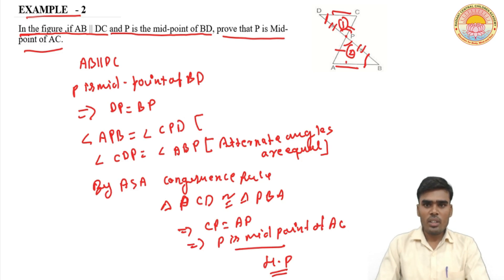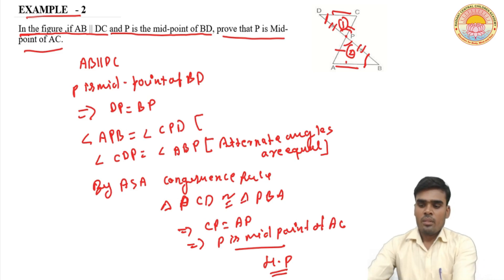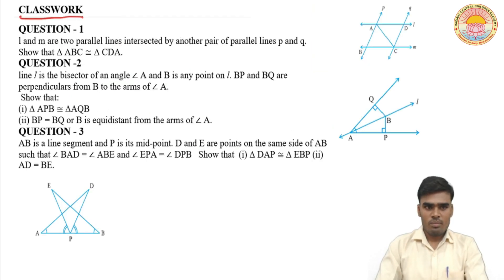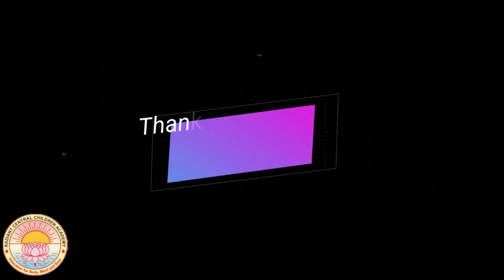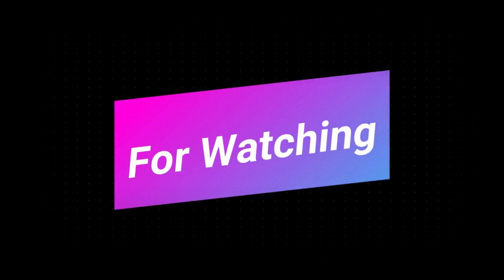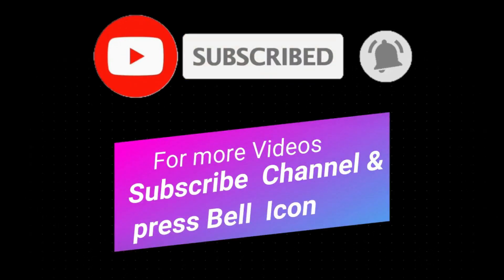इस प्रकार हमने इस question को solve किया। कुछ questions आपको classwork में on the basis of ASA congruence rule दिए हैं जिसको आप solve करेंगे। Classwork question first: L and M are two parallel lines intersected by another pair of parallel lines P and Q. Show that triangle ABC is congruent to triangle CDA. You can use ASA congruence rule here. Similarly, you can solve questions second and third. Thank you so much.